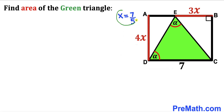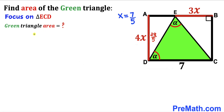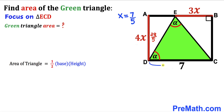Since our x value turns out to be 7/5, let's substitute this value to find AD. That gives us 4 times 7/5, which simplifies to 28/5. So this side length AD turns out to be 28/5. Now let's focus once again on this green shaded triangle ECD and calculate its area. The base of this green shaded triangle is 7 units, and the height is the same as AD, which is 28/5.